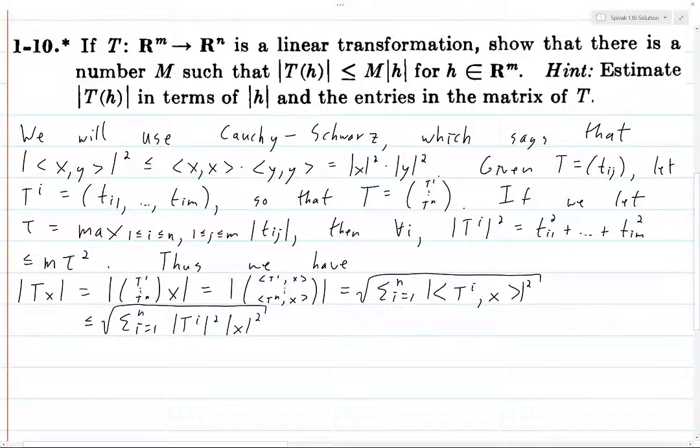Well, we said that this is just m times tau squared. So this is a sum, and each sum has the term norm of x squared in it, so we can factor that out. So we end up with the norm of x squared times the sum from i equals 1 to n, and then norm of T^i squared, well, we said that this is just m times tau squared.